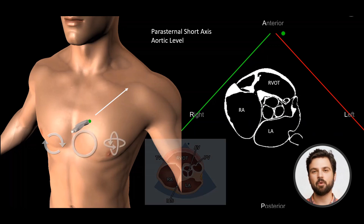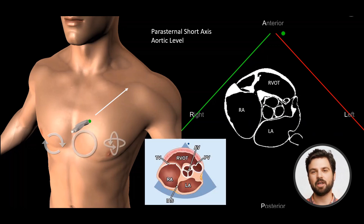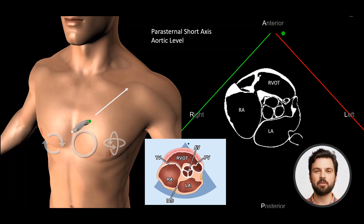The view that we see here is called the parasternal short axis view at the aortic level. The aortic valve is seen as a Mercedes-Benz sign at the center of the image.